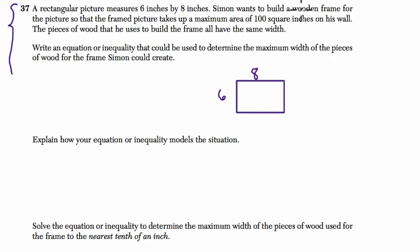Simon wants to build a wooden frame for the picture so that the framed picture takes up a maximum area of 100 square inches on the wall. So far, this has an area of 48. 6 times 8 is 48. We're going to make it larger to have an area of about 100. I want to draw a rectangle around the original. That's actually not that great of a rectangle, so let me fix that.